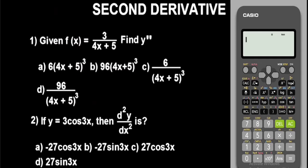Hello guys, welcome back to my channel. In this video we're going to learn how to solve problems involving the second derivative using the Casio fx-991 ES Plus second edition scientific calculator, fast and easily, for your multiple choice questions. Ensure you stay to the very end of this video. Let's get started — this is the Casio fx-991 ES Plus second edition calculator.